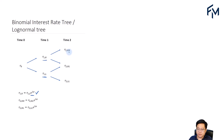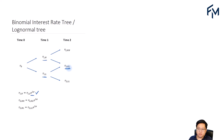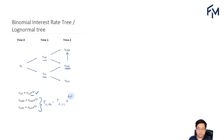For period 2, we can establish the same relationship between every adjacent node. If you know the interest rate at R sub 2 low-low, you multiply by e to the power of 2 sigma to get R sub 2 HL. Similarly, from R sub 2 HL you can get R sub 2 HH. Combining these two relationships, R at period 2 for HH equals R at period 2 for LL multiplied by e to the power of 4 sigma.